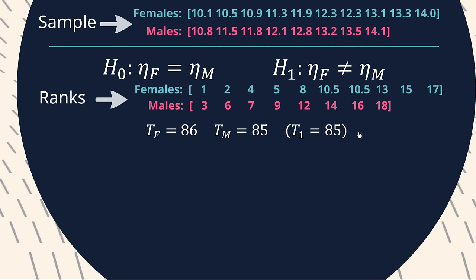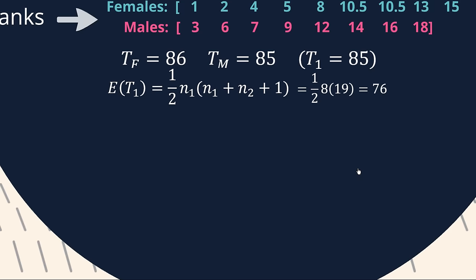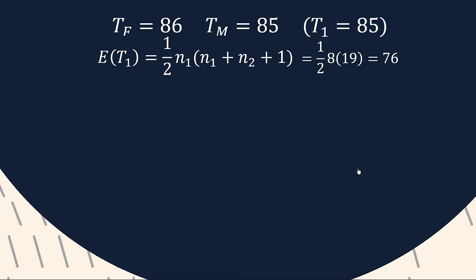In brackets here, I've put T1 equals 85. And what tends to happen is that we choose the sample with the fewer observations, which in this case is males, and that rank sum is going to be our test statistic. So T1 happens to be TM, which is 85. Now to find the expected value of T1, and when I say expected value, I mean assuming the null hypothesis is true. So the expected value of T1 is just found using this formula here, where n1 is the number of observations in the smaller sample, and n2 is the number of observations in the larger sample. So it would be 8 and 10 respectively. And summing all that in, we get 76. So all things being equal, we would expect the sum of those male ranks to be 76. But they're not, they're 85. So how are we going to assess whether that's far enough away from 76, whether that's extreme enough for us to reject our null hypothesis?